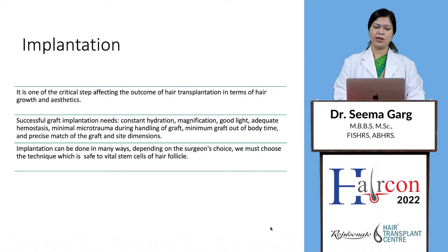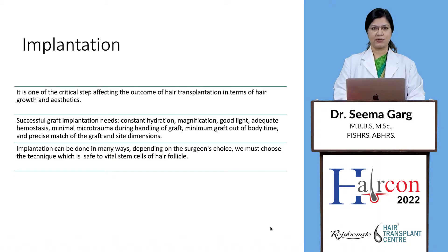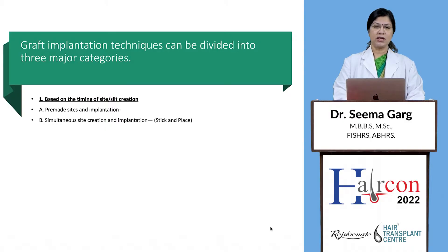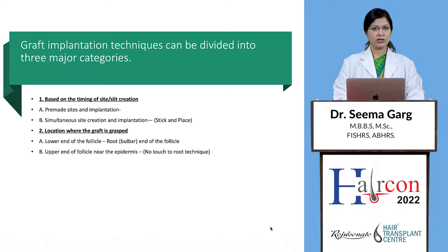Implantation can be done in various ways depending on the surgeon's choice. We must choose the technique which is safe to the vital stem cells of the hair follicle. Graft implantation techniques can be divided into three major categories: based on the timing of site or slit creation, they can be either pre-made or created simultaneously as in the stick-and-place technique. Then based on the location from where the graft is grasped — from the lower root end or from the upper end near the epidermis, which is the no-touch-to-root technique.